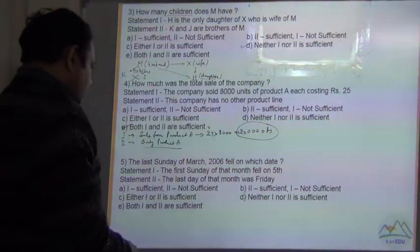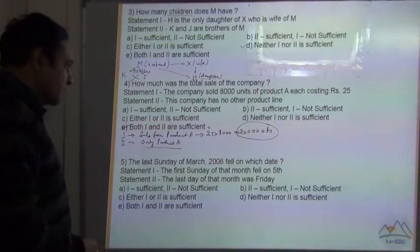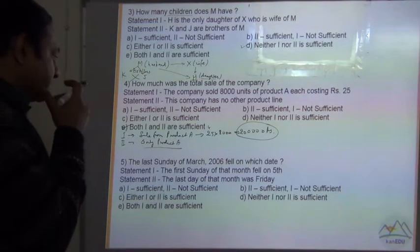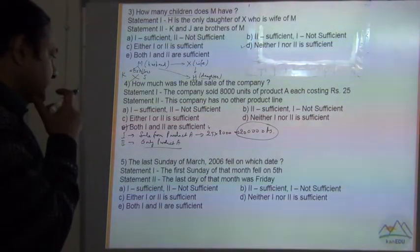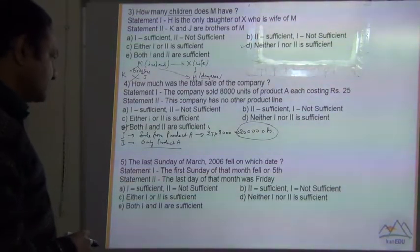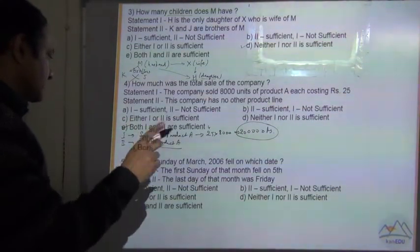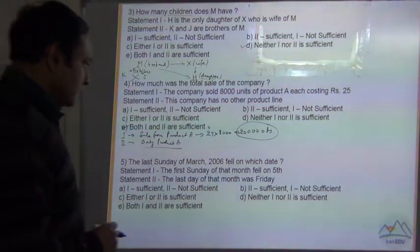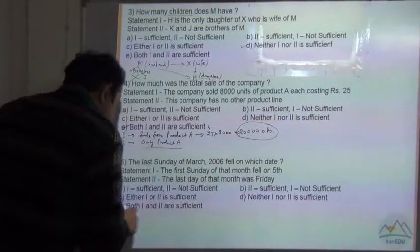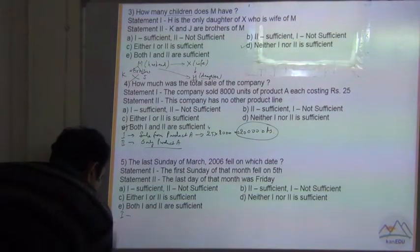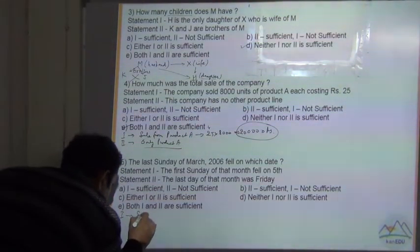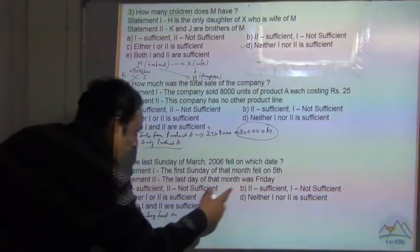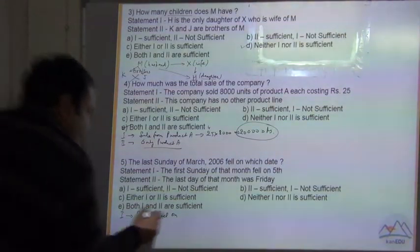Question number 5: The last Sunday of March 2006 fell on which date? What was the date of the last Sunday of March 2006? Statement 1 says the first Sunday of that month fell on 5th. As per Statement 1, Sundays fell on the 5th.